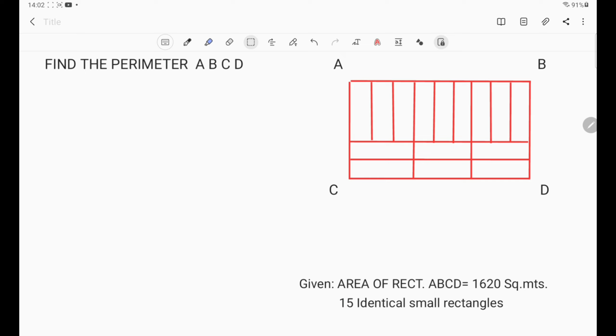As we can see, there are 15 identical rectangles inside the big rectangle. Nine of these are in vertical position and six of these are in horizontal position.